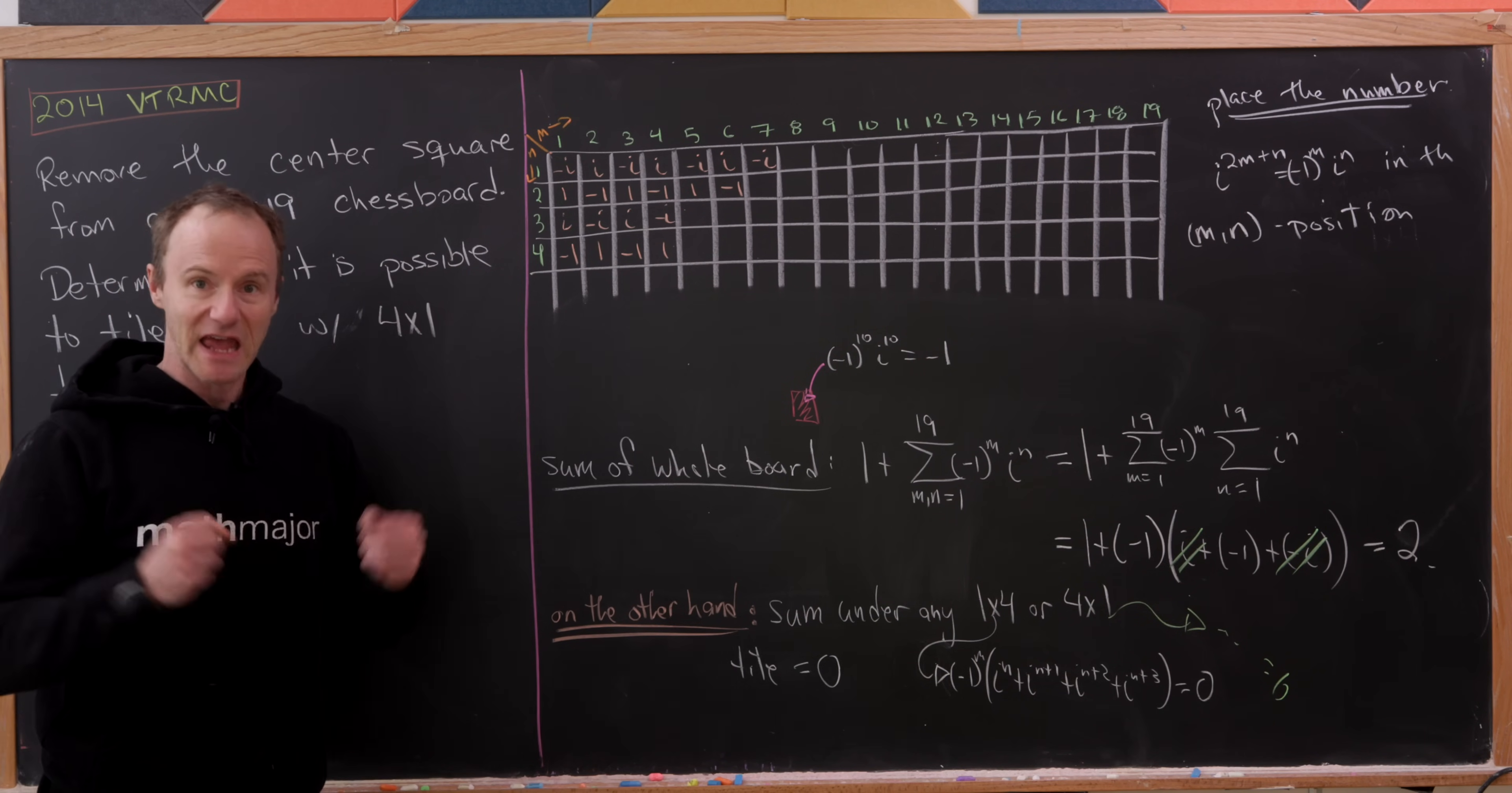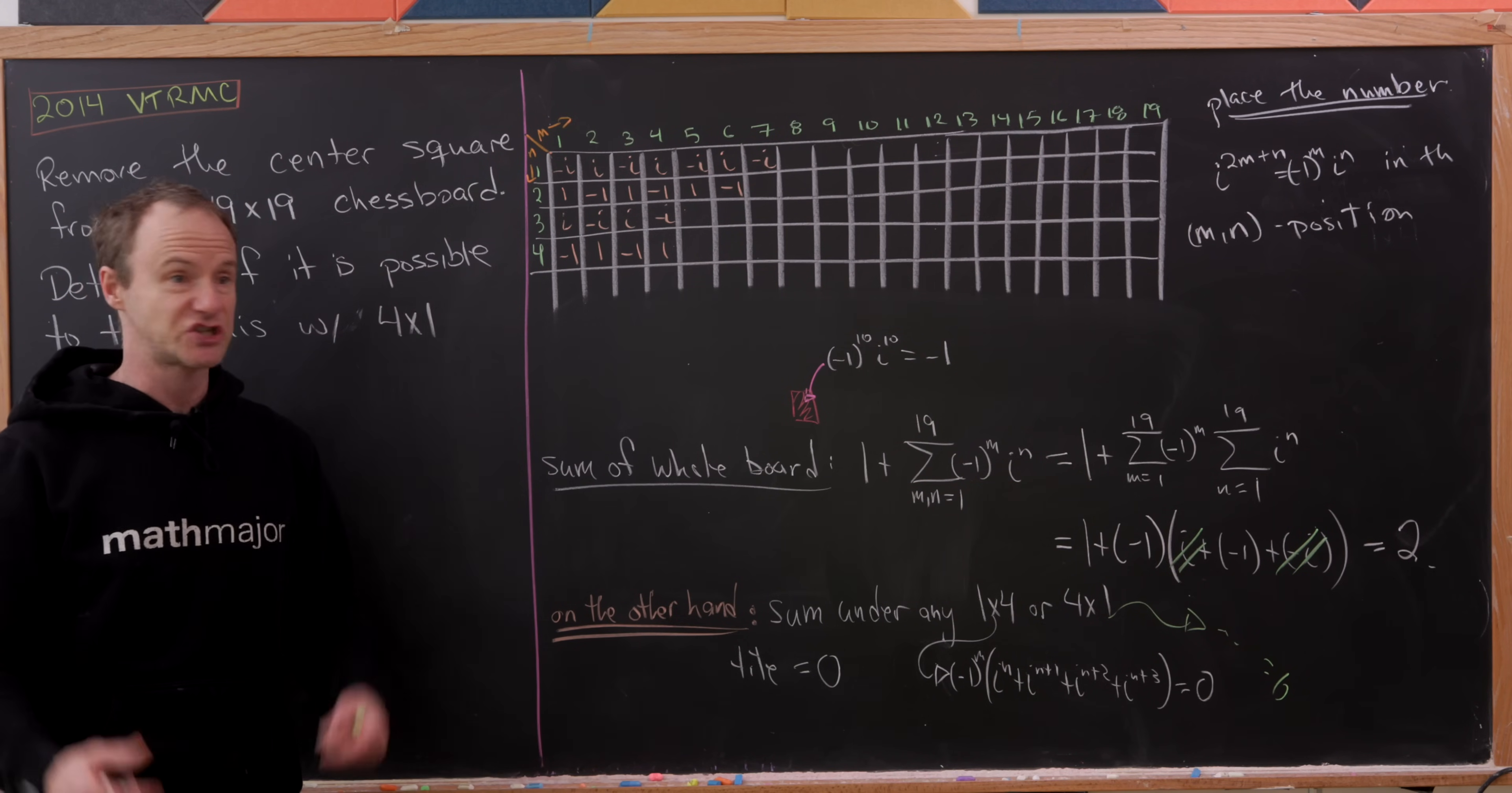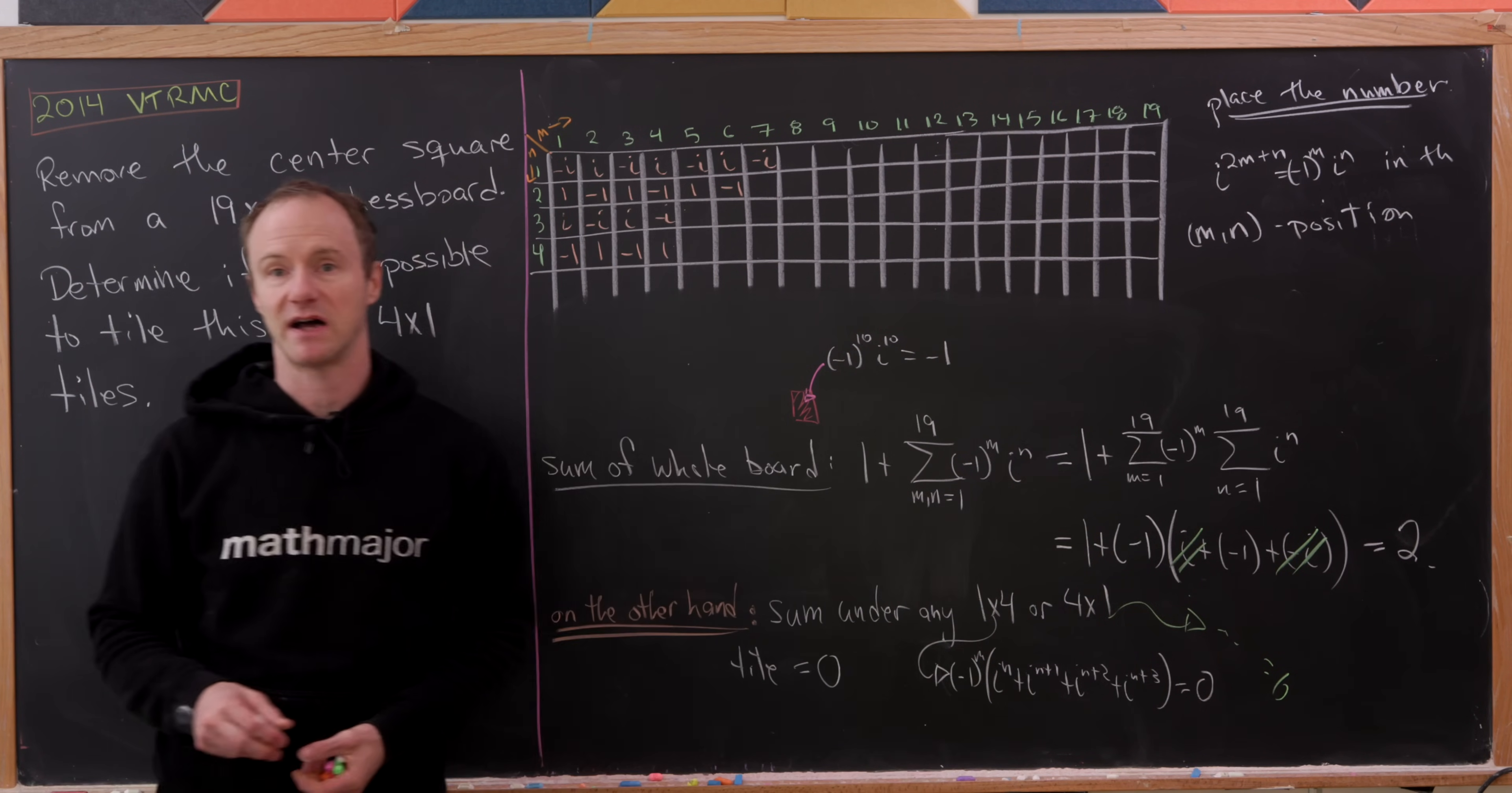A very similar argument will show that the sum under a 4 by 1 tile is also equal to 0. But that means if we had a tiling with these types of tiles, the sum under all of the tiles would be equal to 0. And thus, the sum under the entire mutilated chessboard would be equal to 0. But we also just counted it up to be equal to 2. And so that's a contradiction, meaning that such a tiling is in fact impossible.